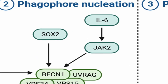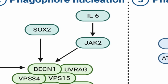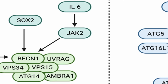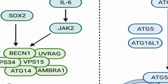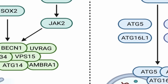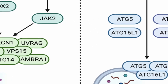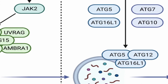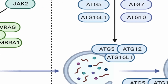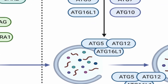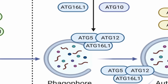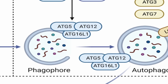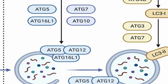The class 3 phosphatidylinositol-3 kinase complex, which includes Beclin-1, VPS-34, VPS-15 and ATG-14, are essential for the nucleation of the phagophore.